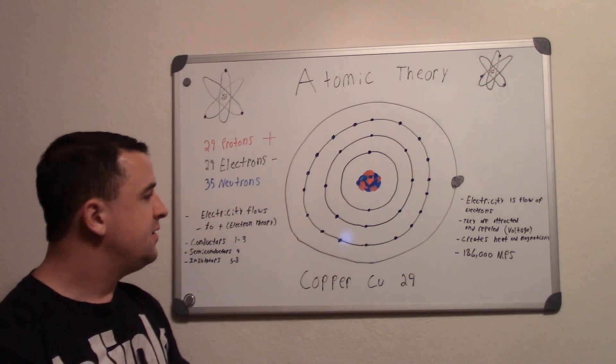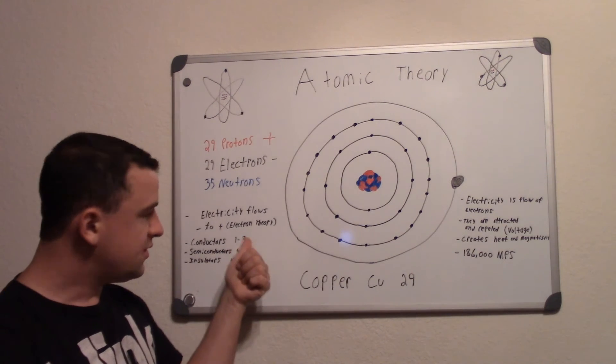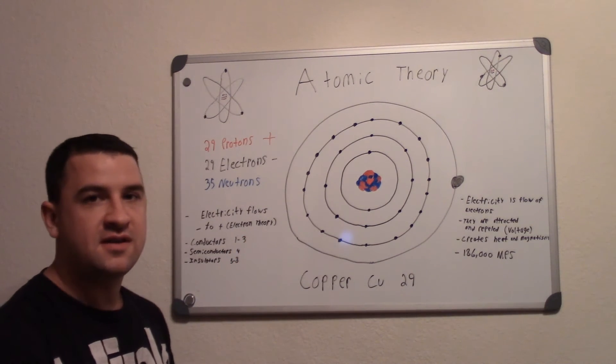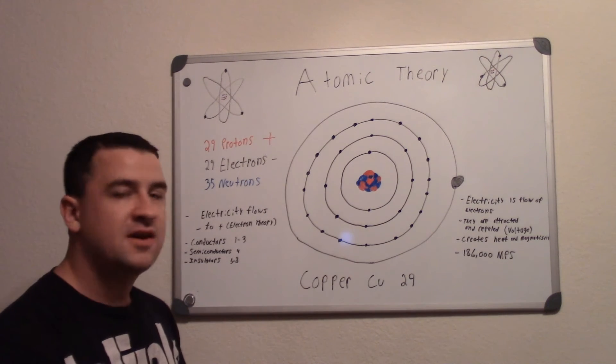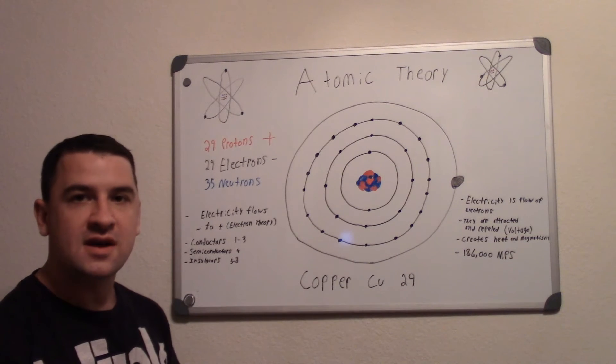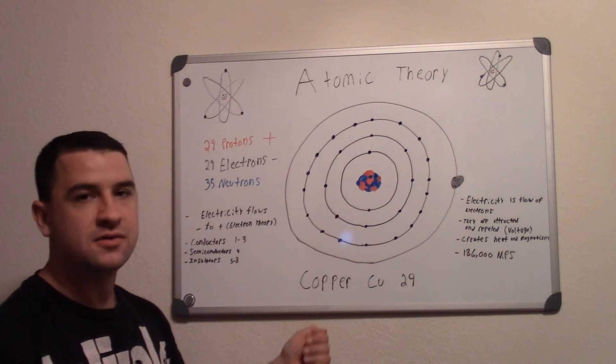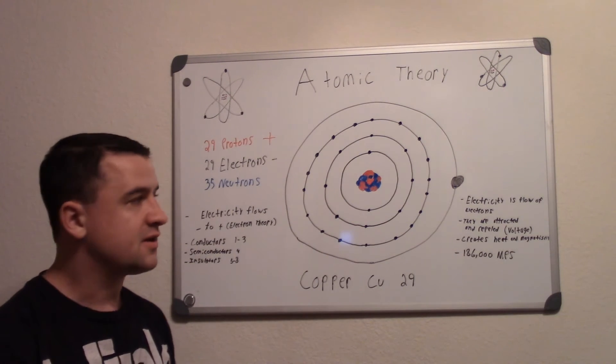And the reason why these things are moving in electron theory is because I stated electrons are a negative charge. So because it's a negative charge, it will be magnetically attracted to the positive side of the circuit as well as it will be repelled away from the negative side of the circuit.